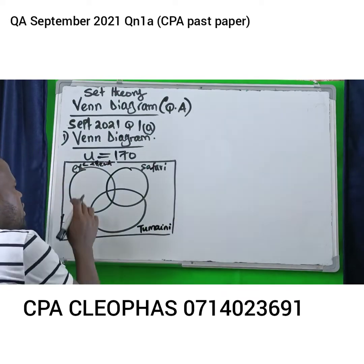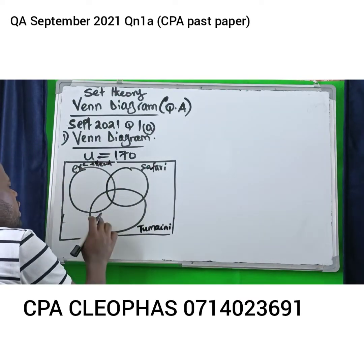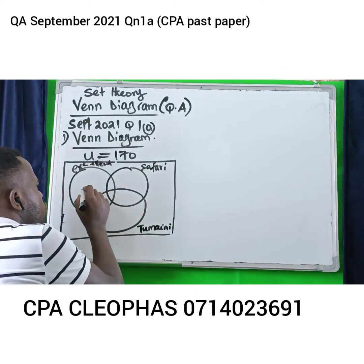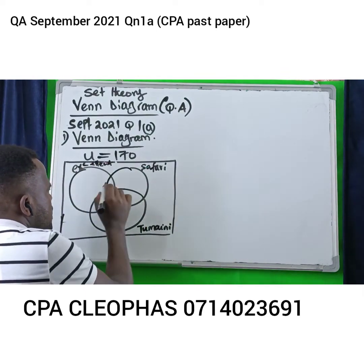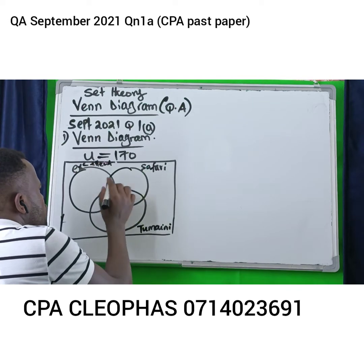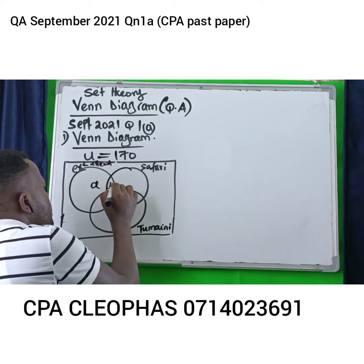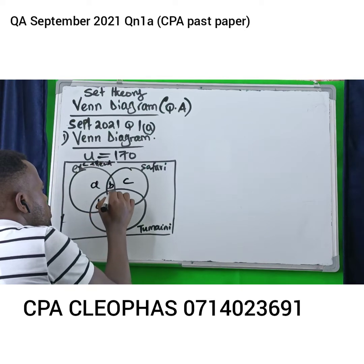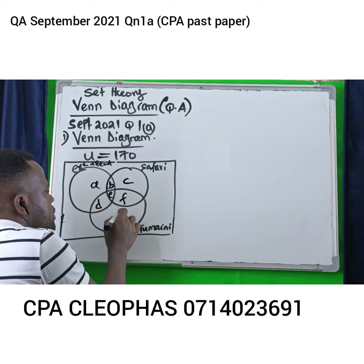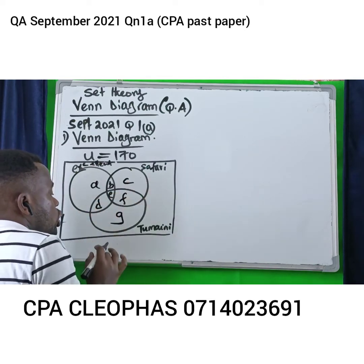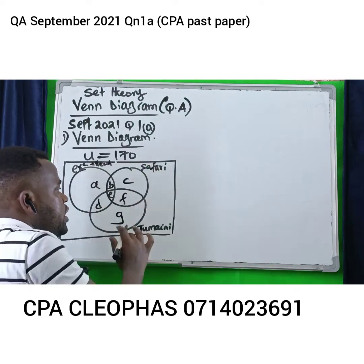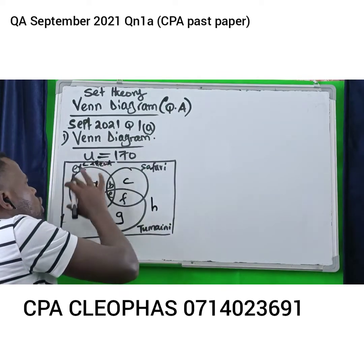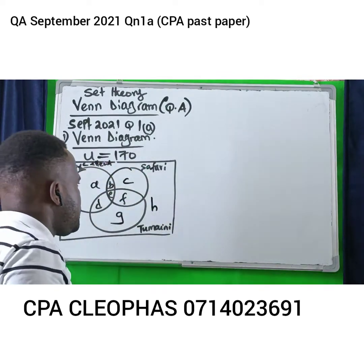Let's now label these segments so that they are represented by a letter. I'll name them across each section. I'll call these A, B, C. This will be D, E, F. And I want to label the outside part H, to represent those who are not part of these three preferences.